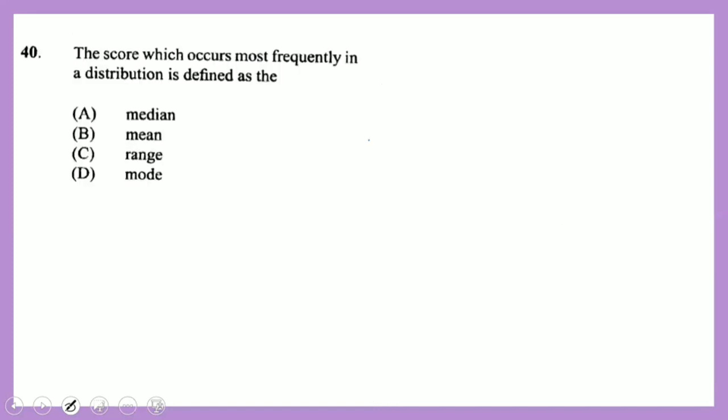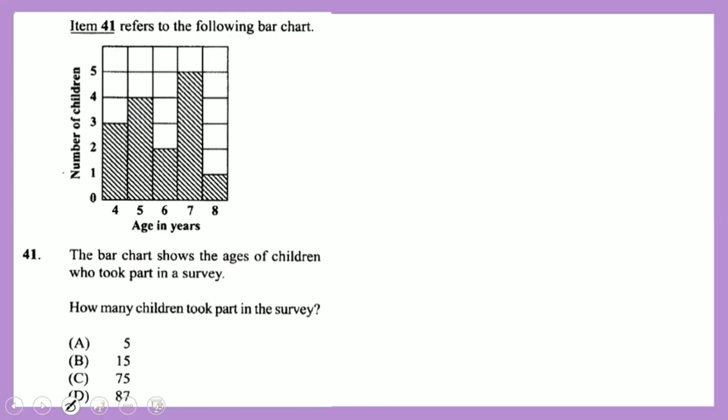Question 40: the score which occurs most frequently in a distribution is defined as the mode. A helpful memory trick: 'most' and 'mode' almost rhyme — the mode is the value that occurs the most.